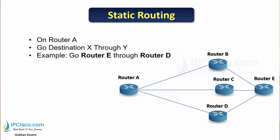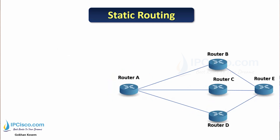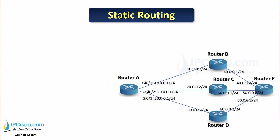Let's talk about static routing on a topology. Here we are on Router A, and we will teach Router A to go to a destination X through destination Y. For example, we can say: go to Router E through Router D. Let's give an example with this topology.